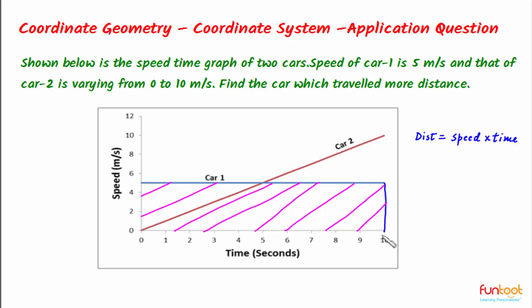Length here is time and breadth here is speed. So, the area of this rectangle will be the product of time and speed. The area under graph of car 1 is the product of time and speed, which we can write as speed multiplied by time. This is same as speed into time is equal to distance.